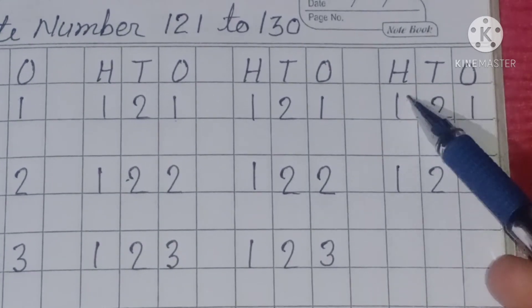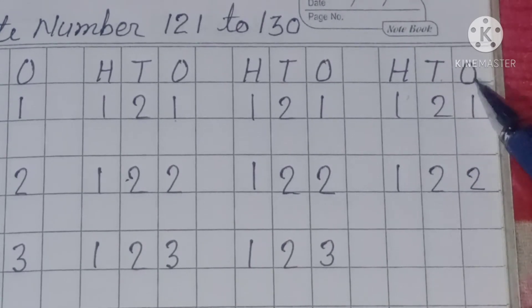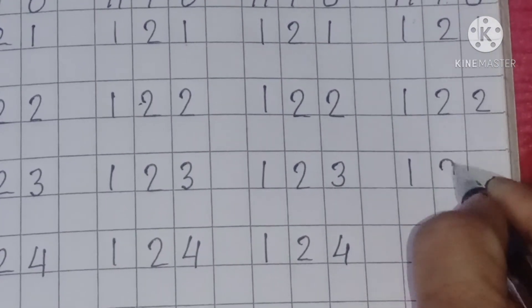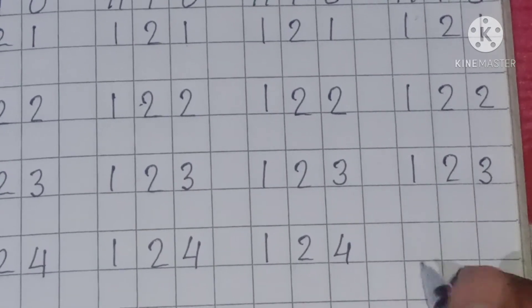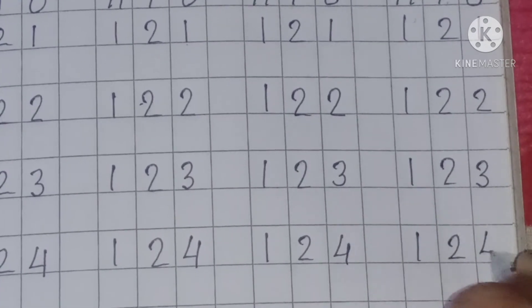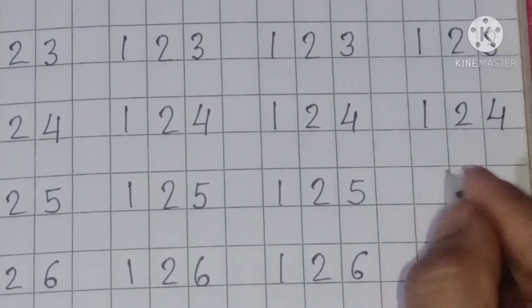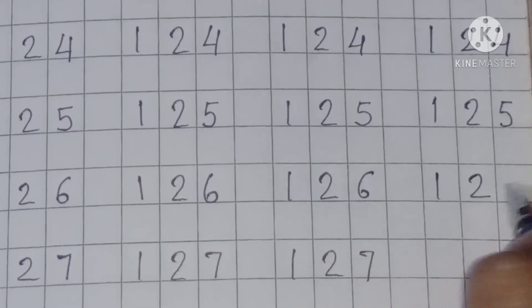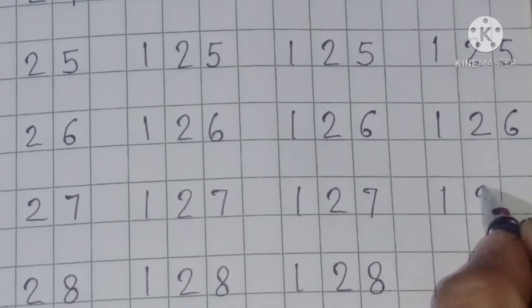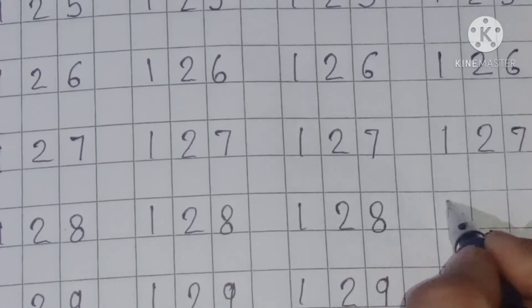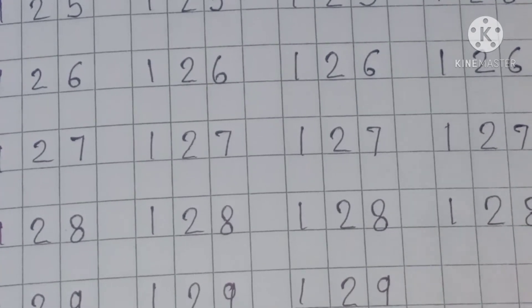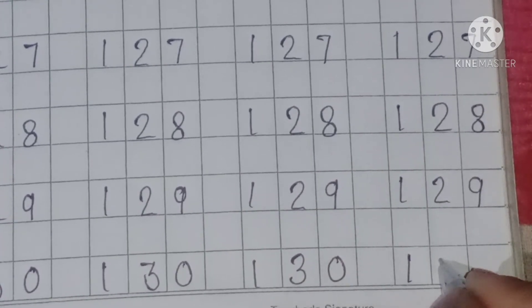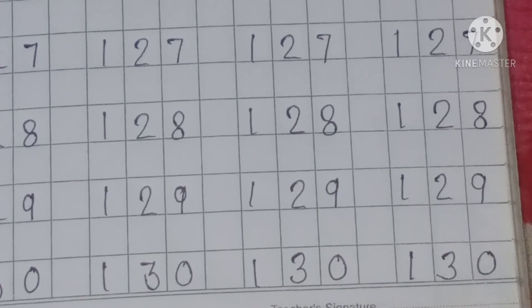H means 100, T means tens, and O means ones. So repeat: 1, 2, 3: 123. 1, 2, 4: 124. 125, 126, 127, 128, 129, and 130.